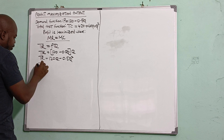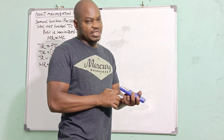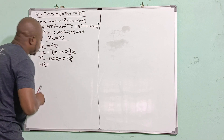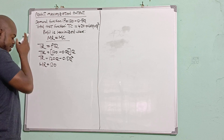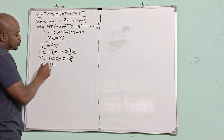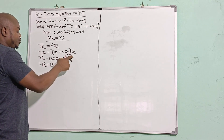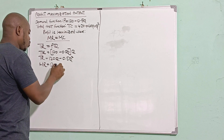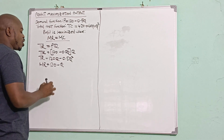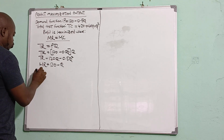Now I need to differentiate the total revenue function to find the marginal revenue. Differentiating TR = 120Q - 0.5Q²: for 120Q, 1 × 120 = 120 and the Q collapses, giving 120. For 0.5Q², 2 × 0.5 = 1, giving just Q (raised to power 1, which we don't write). So marginal revenue MR = 120 - Q.